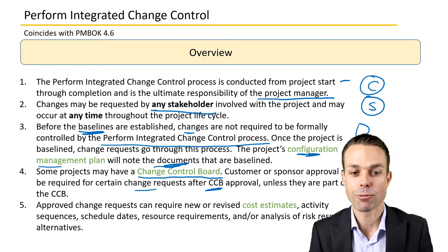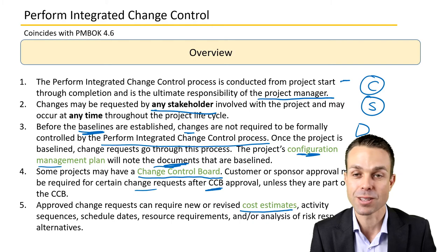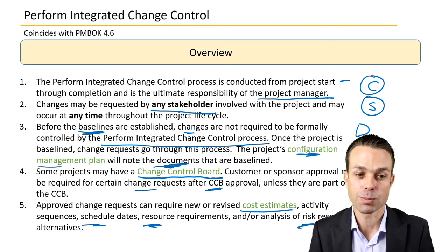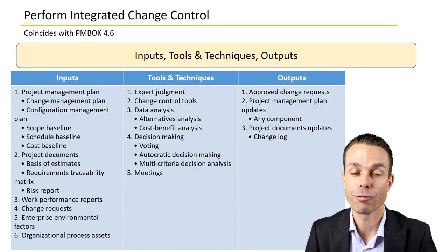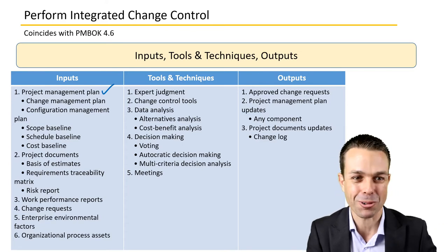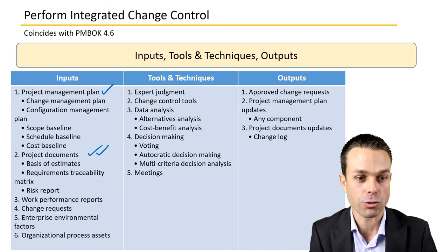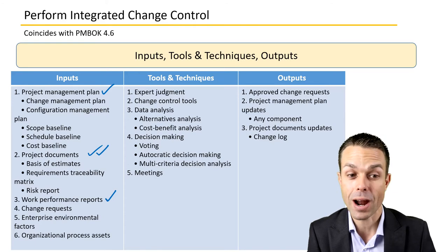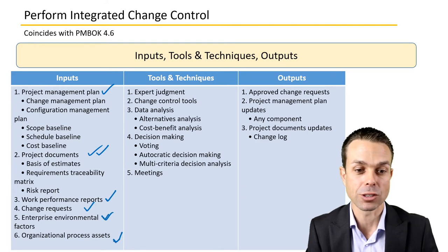Approved change requests can require new or revised cost estimates. Of course, if you're making a change to scope, it might change the cost involved, the schedule, the resources, or any risk response alternatives. For inputs, tools, techniques, and outputs: we've got the project management plan as an input — we need to know what we are delivering. We've also got project documents, work performance reports showing how our project is tracking, any existing change requests, and EEFs and OPAs such as regulations or existing templates.